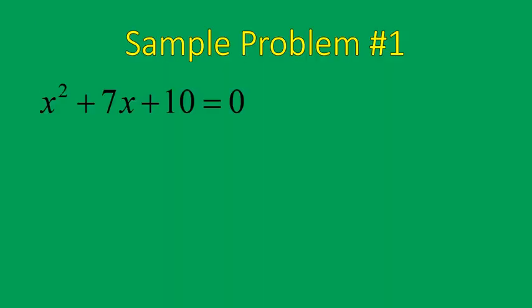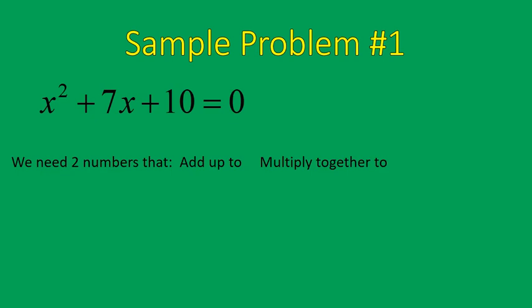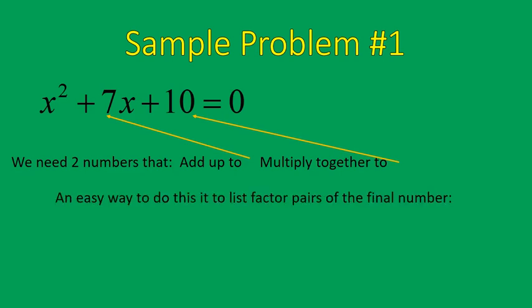The first example is x squared plus 7x plus 10 equals 0. The way that you solve these types of problems using factoring, you'll follow the same steps. Number one, you need to find two numbers that add up to give you 7 and multiply together to give you 10. We use 7 because it's the number in front of x, and 10 because it's the constant at the end. So we need two numbers that add up to 7 and multiply together to give you 10.